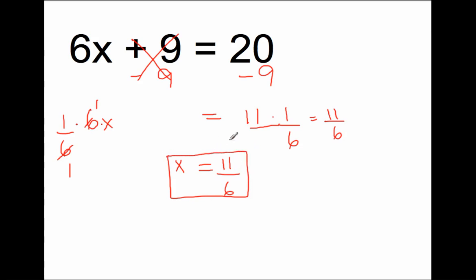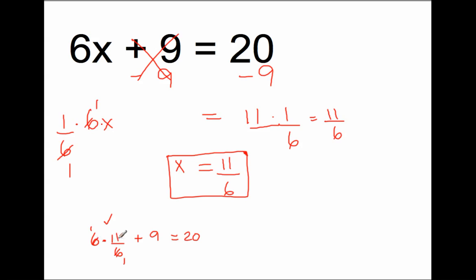Now, you're used to getting whole numbers all the time. But primarily in algebra, it's more often the case that you're going to get a rational number — a number that looks like a fraction — as opposed to simply a whole number. Of course, whole numbers can be written as fractions too. Let's plug this in and check: 6 times 11 sixths plus 9 should give me 20. I can cross-cancel the 6, so that gives me 11 plus 9, which is 20. Yes — the missing number that makes this true is 11 sixths.